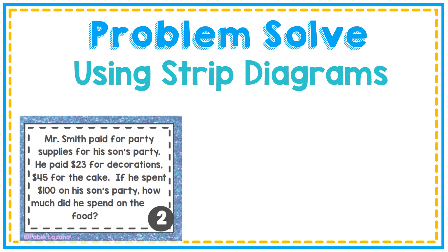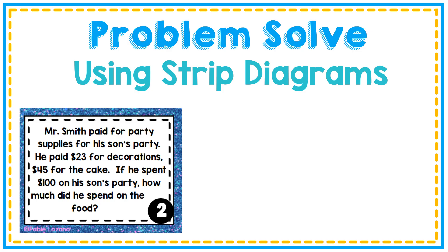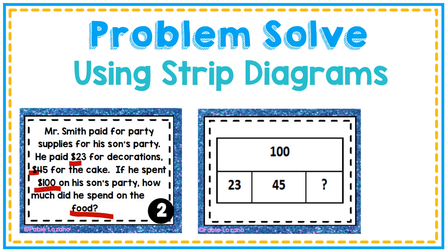Let's look at another example. Mr. Smith paid for party supplies for his son's party. He paid $23 for decorations, $45 for the cake. If he spent $100 on his son's party, how much should he spend on the food? Here's my strip diagram. He spent $23 for decorations, $45 on the cake. I'm looking for the food - I don't have that. And I have the total amount or the whole of what he spent.